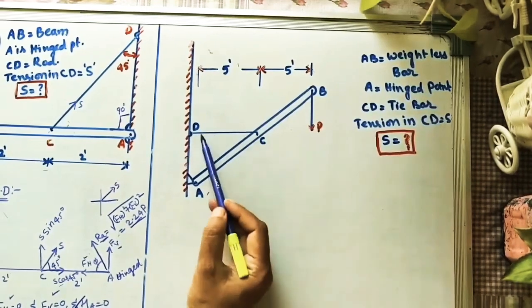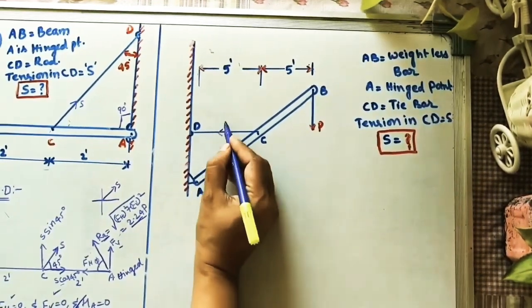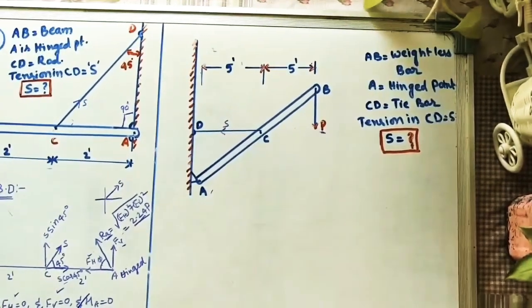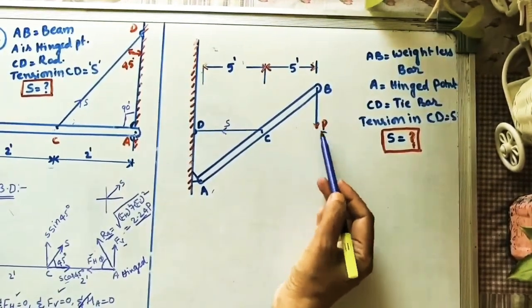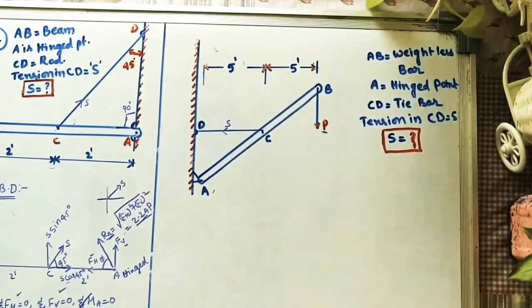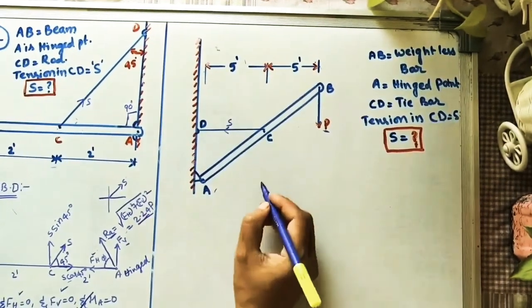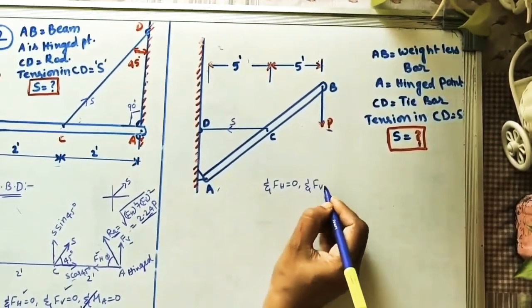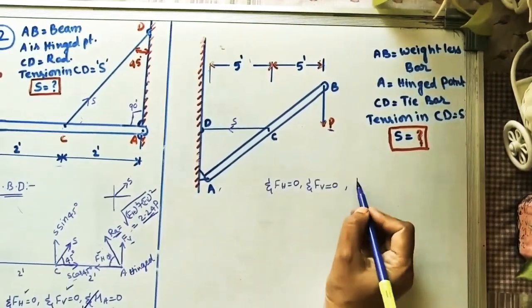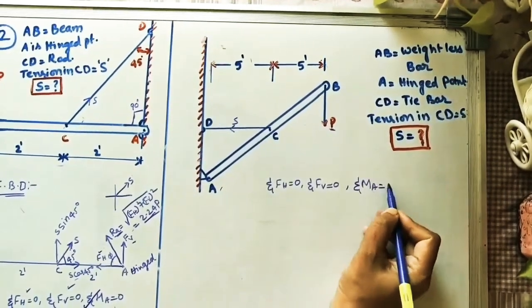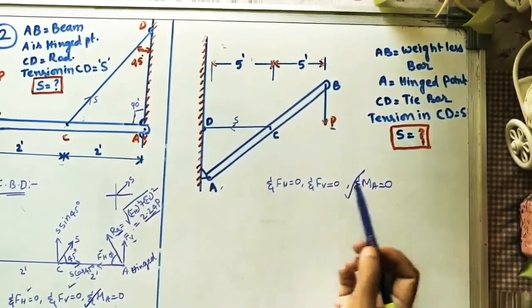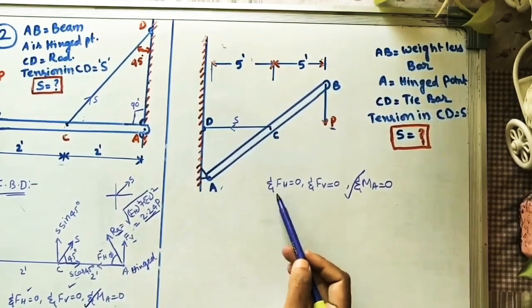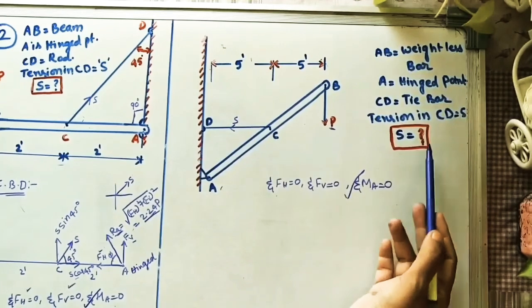We have to find tension S because of this P force. S will come in terms of P because P value is not given. For finding S, we have to take sigma Ma should be zero condition. If you want to find Ra value also, we have to follow the other force balance conditions. According to the given question, we decide which conditions to use.